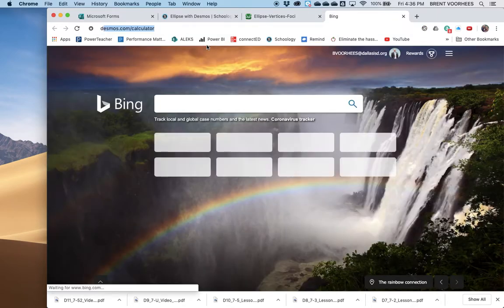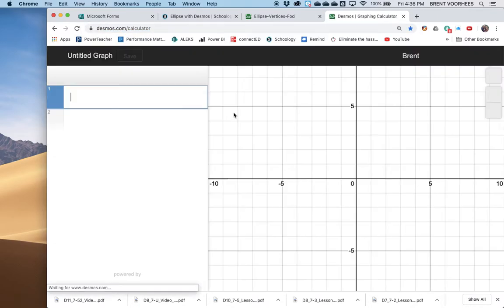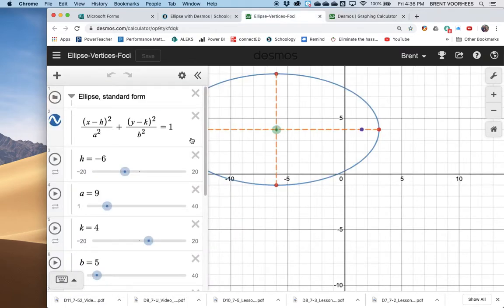So normally when you go to Desmos and you open it up, you just get a blank graph like this. And what I've done is I've programmed all this stuff in here and saved the graphs and I've shared the link. So this is how I'm going to do it.